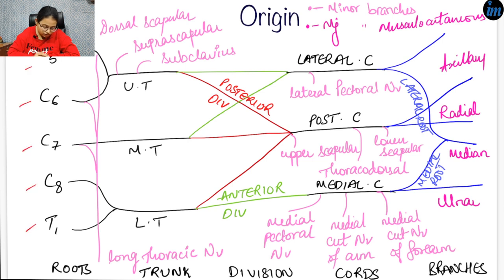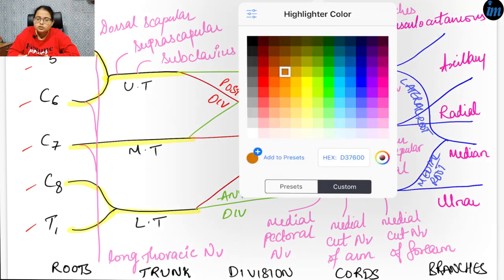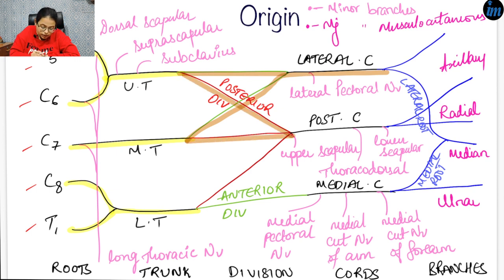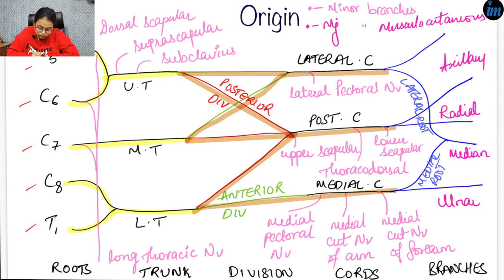The brachial plexus is formed by the anterior rami of C5, C6, C7, C8, and T1 spinal nerves. The C5 and C6 nerve roots combine to form the upper trunk. C7 directly gives the middle trunk, and C8 and T1 combine to form the lower trunk. Each trunk gives two divisions — anterior and posterior. The anterior divisions of the upper and middle trunk combine to form the lateral cord. The posterior divisions of all three trunks combine to form the posterior cord. The anterior division of the lower trunk gives the medial cord.